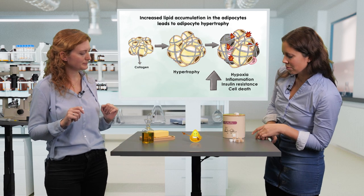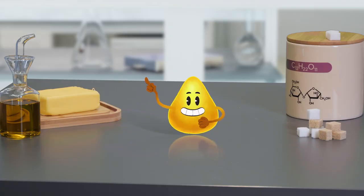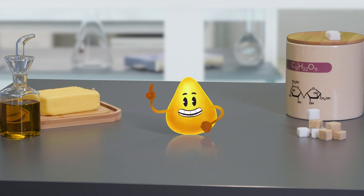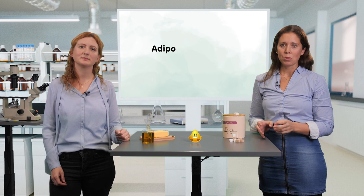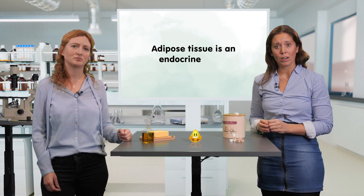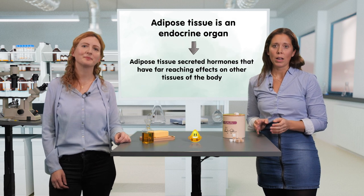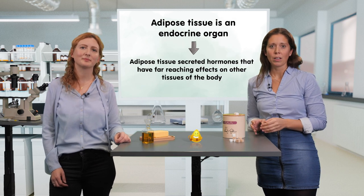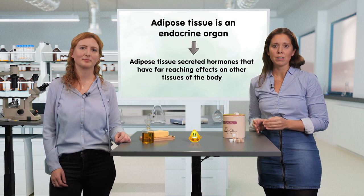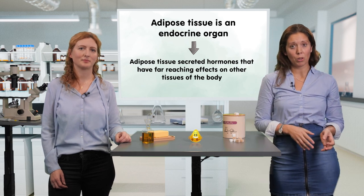One of the most important developments in adipose tissue biology since the mid-1990s is the realization that adipose tissue is an endocrine organ. That means adipose tissue secretes hormones and other molecules that have far-reaching effects on other tissues of the body.